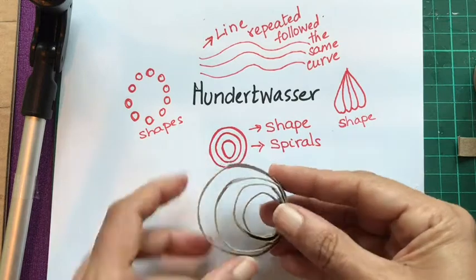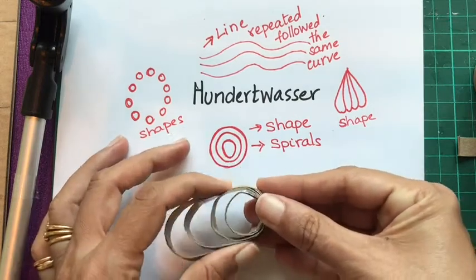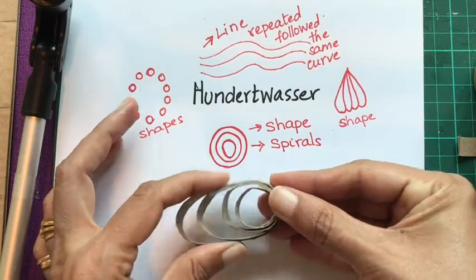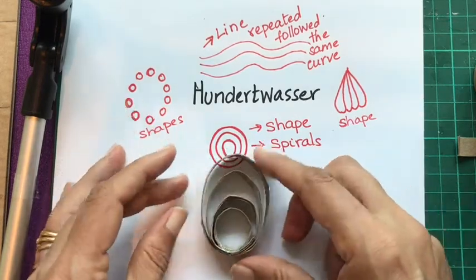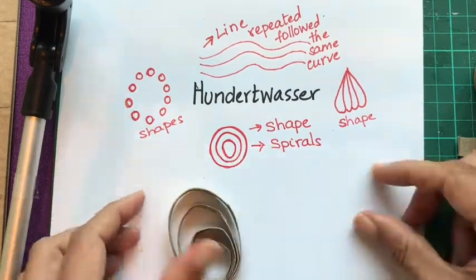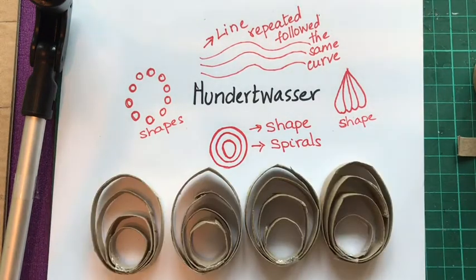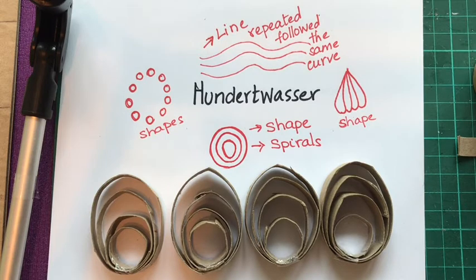Because this is cardboard, you can press it if you like and make it more oval if you don't want it circular. Create a few — I've created about eight of these, because next week you'll use them to decorate your structure.